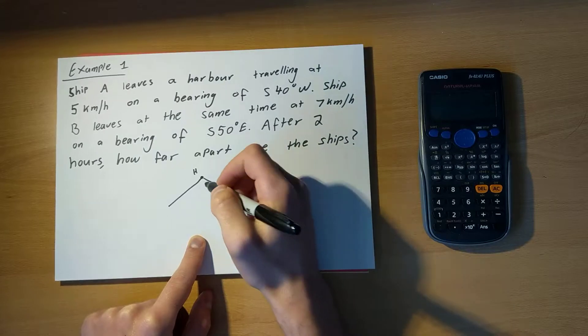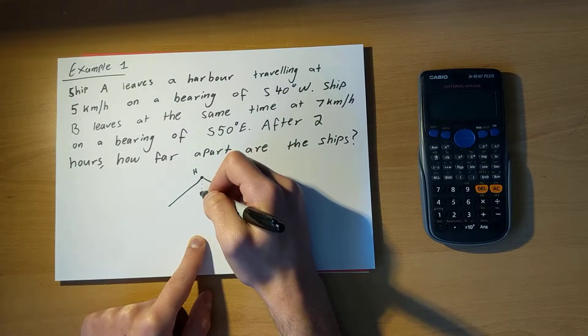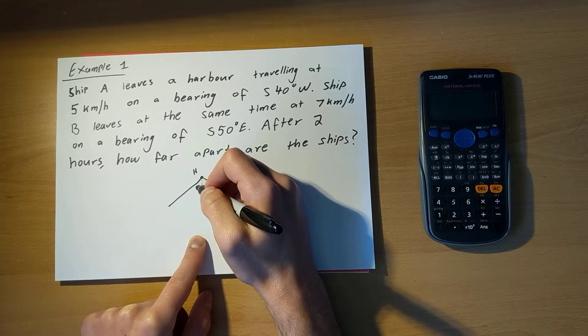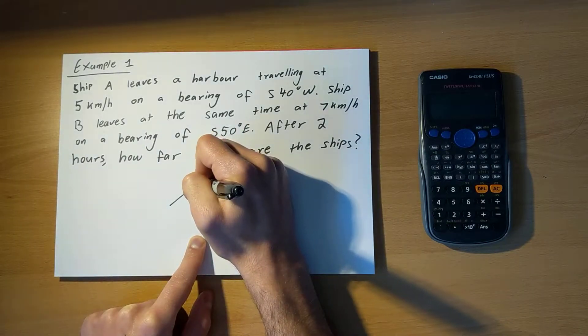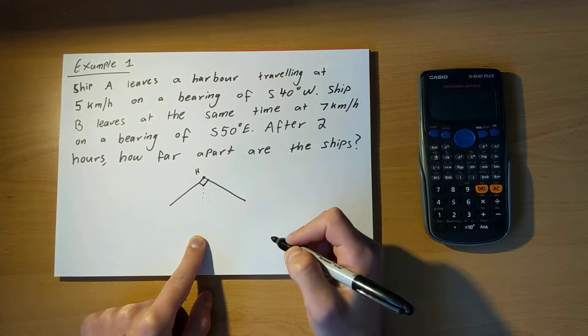Hopefully, you can see, if this is my south line, this angle is 40 degrees, this angle is 50 degrees, which means that together there is a right angle there between ships A and ship B.